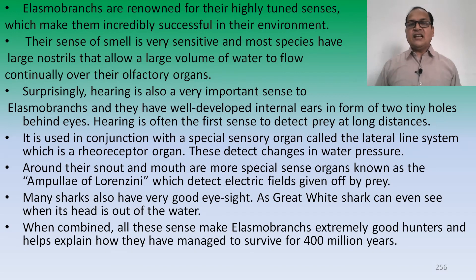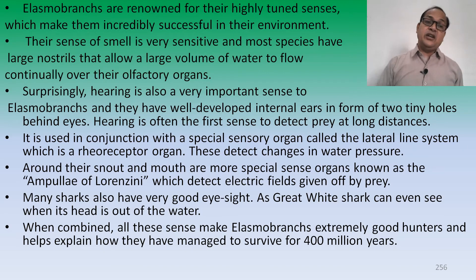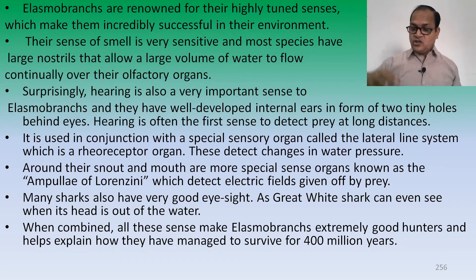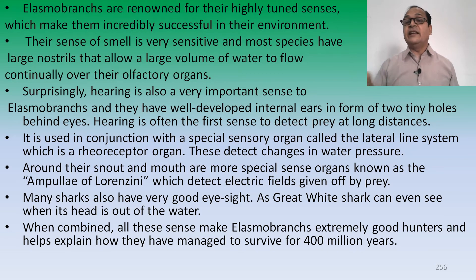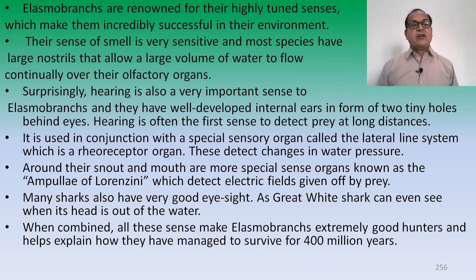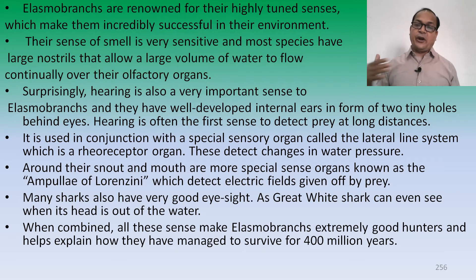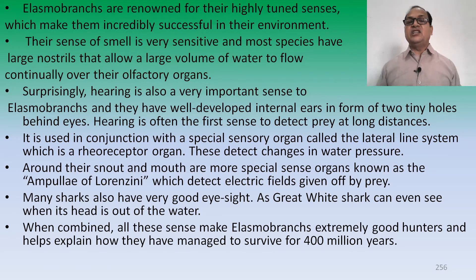Many sharks also have very good eyesight — a great white shark can even see when its head is out of water. When combined, all these senses make elasmobranchs extremely good hunters, which helps explain how they have managed to survive for 400 million years.